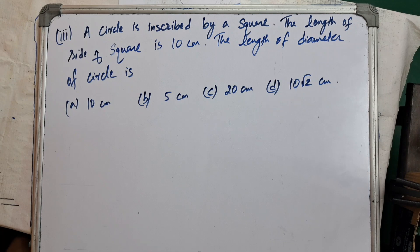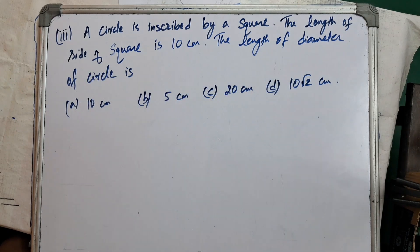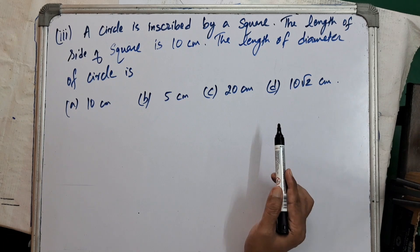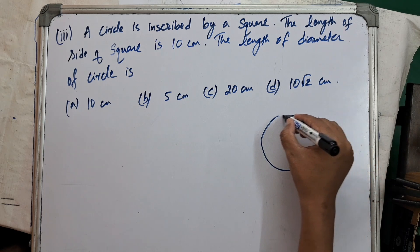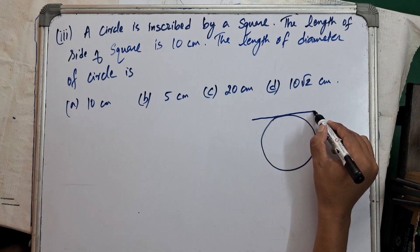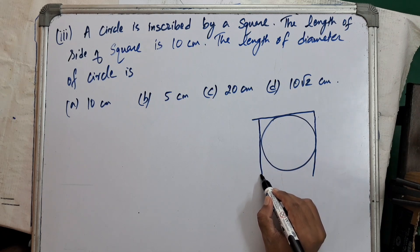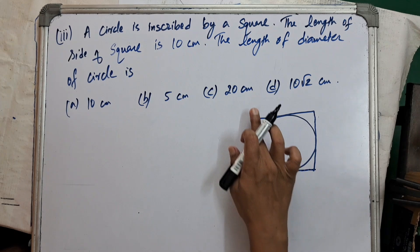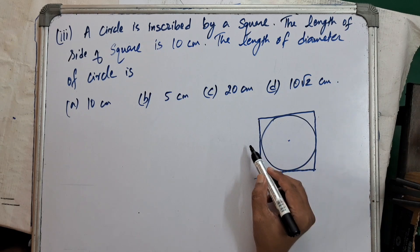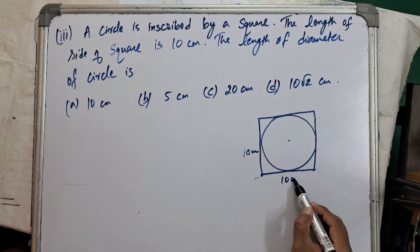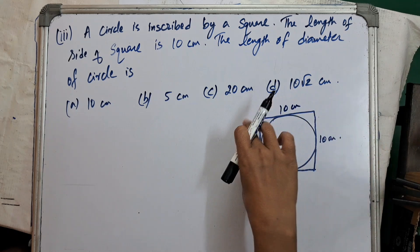Question number 3 of 19: A circle is inscribed by a square, and the length of the side of the square is 10 centimetres. What is the length of the diameter of the circle? Let's understand with a diagram — there is a square around the circle, and all sides of the square are equal. Each side is 10 centimetres.